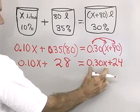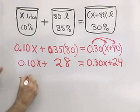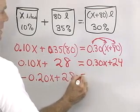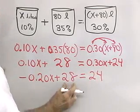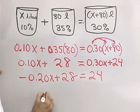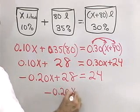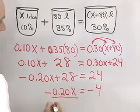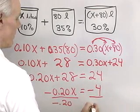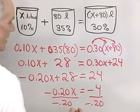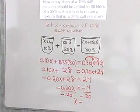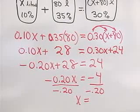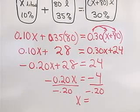Subtracting 0.30X from each side gives negative 0.20X plus 28 equals 24. Adding negative 28 to both sides gives negative 0.20X equals negative 4. Dividing both sides by negative 0.20, we get X equals 20.